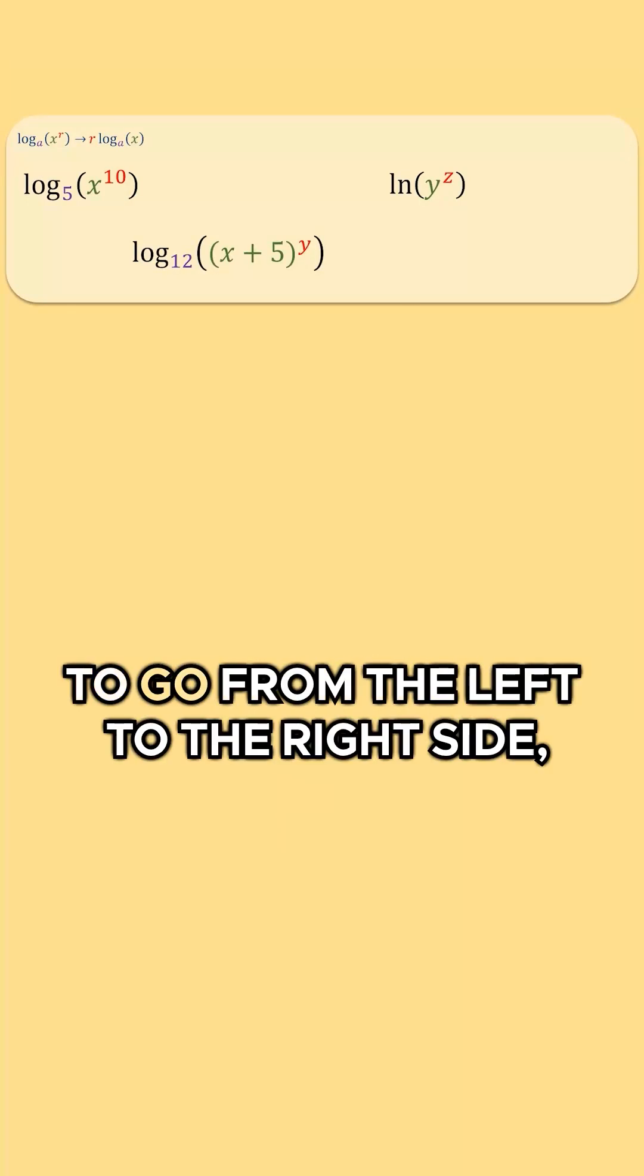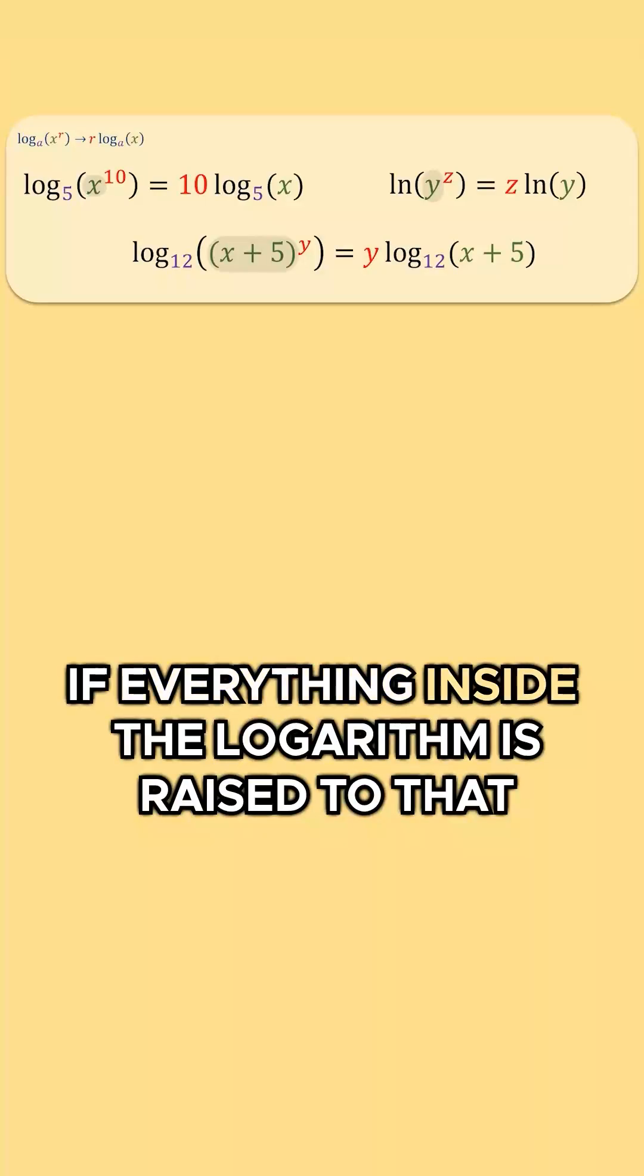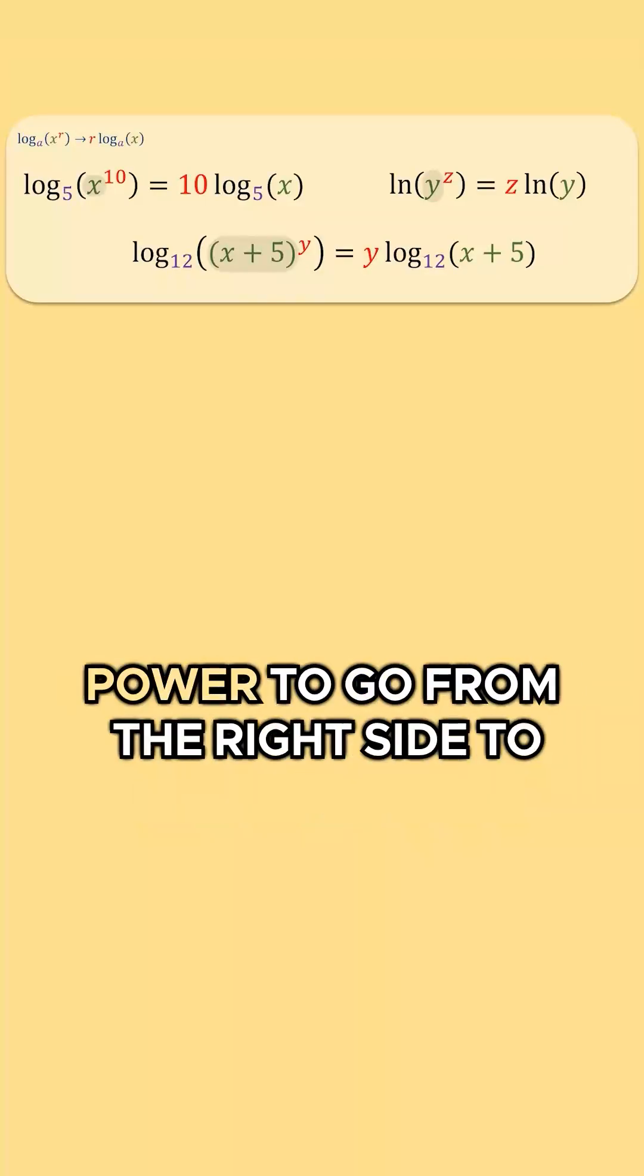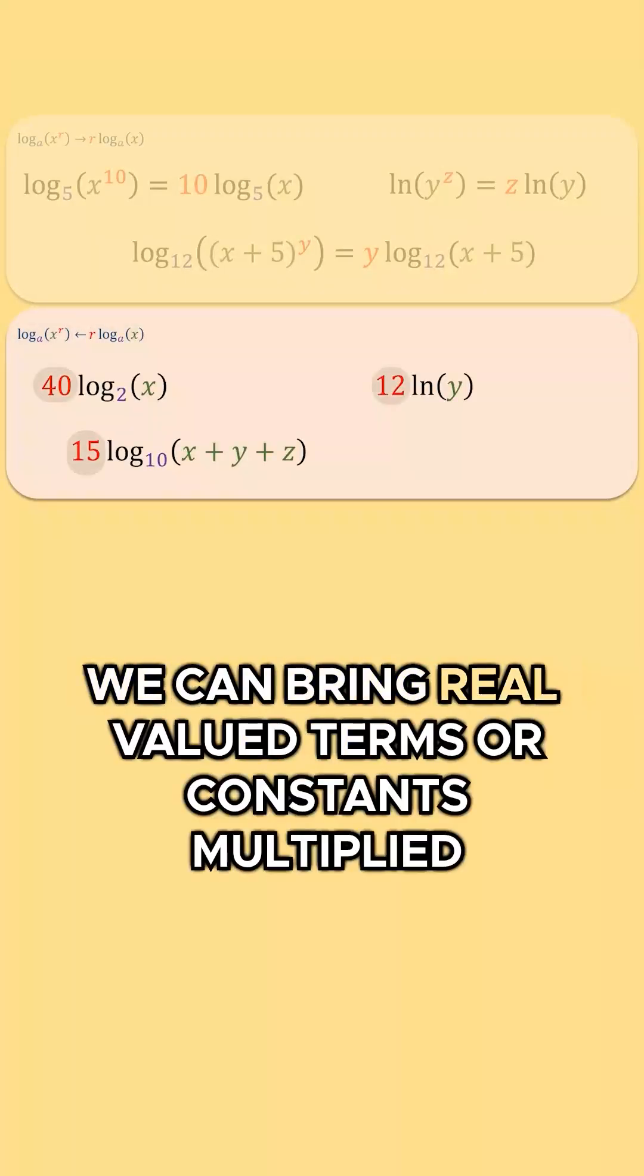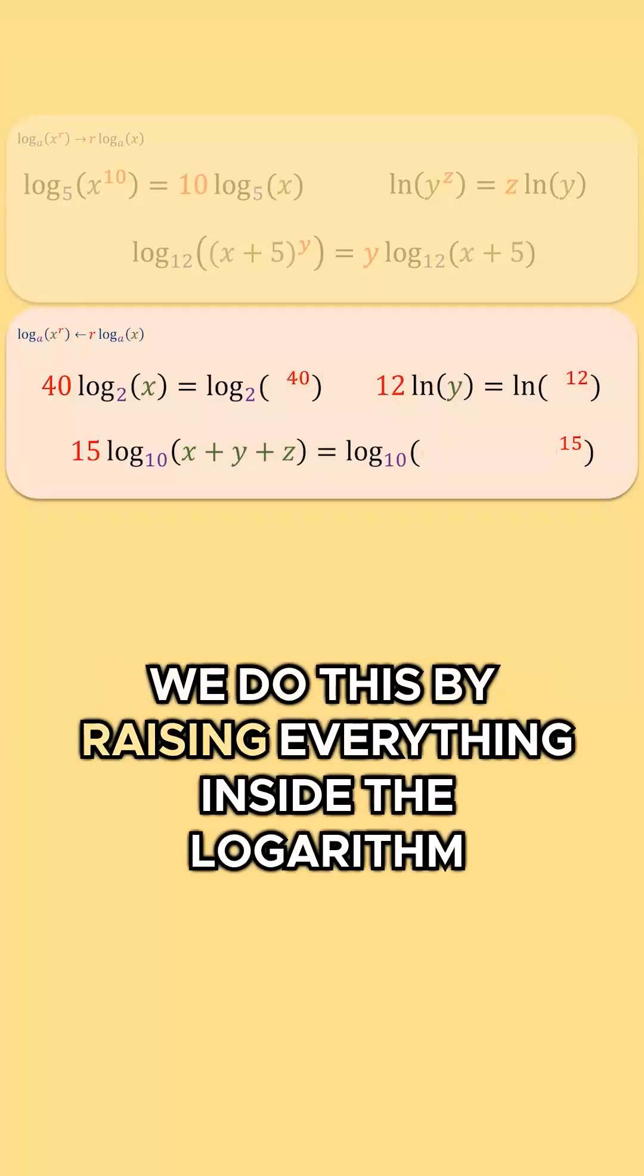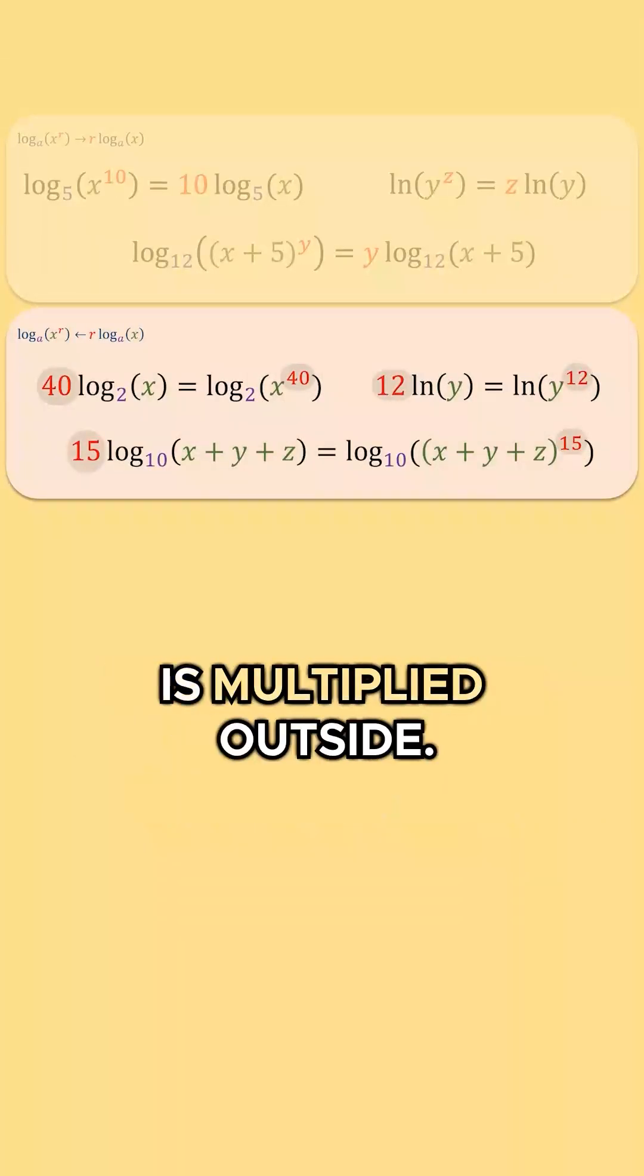Ultimately, to go from the left to the right side, we can move the power outside if everything inside the logarithm is raised to that power. To go from the right side to the left side of the rule, we can bring real valued terms or constants multiplied by the logarithm inside. We do this by raising everything inside the logarithm to the power of the term or constant that is multiplied outside.